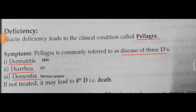Hello viewers. In the previous session we were discussing about niacin, its sources, requirement, function and deficiency. We ended with the deficiency of niacin causing pellagra and its complications involving dermatitis, diarrhea and dementia. Hence pellagra is called as the 3D disease.